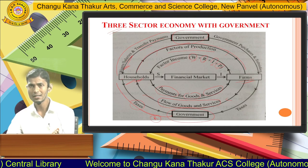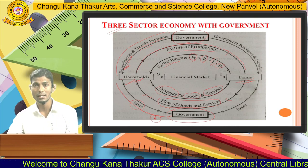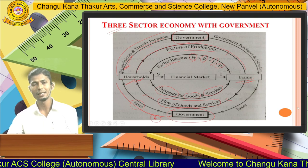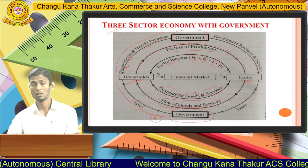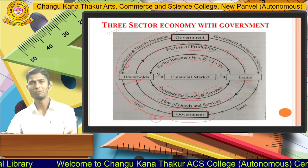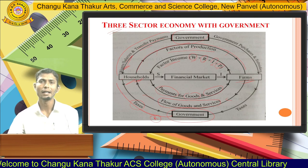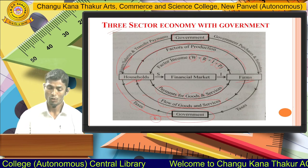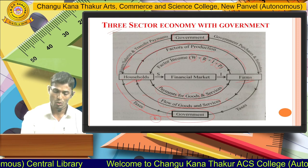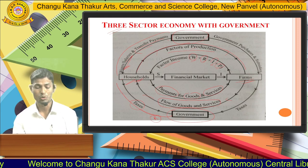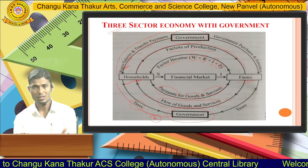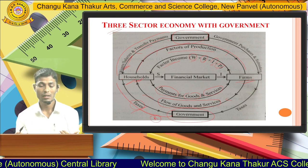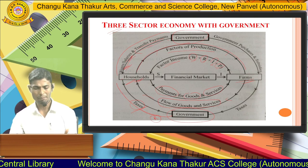Transfer payments also include various allowances and subsidies. For example, the government provides subsidies on LPG and various agricultural inputs. Another example is the Pradhan Mantri Kisan Samman Nidhi Yojana, under which farmers receive around 500 rupees per month or 6,000 rupees per year without providing any specific work input. So households receive income in the form of wages, salaries, and transfer payments, and multiple welfare schemes provide money to households.